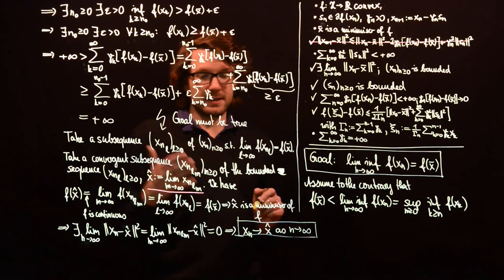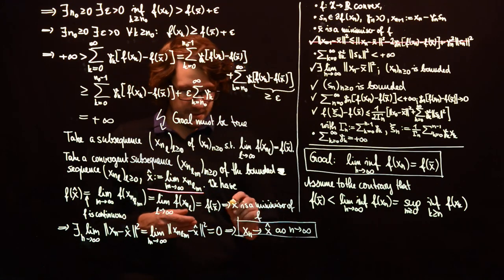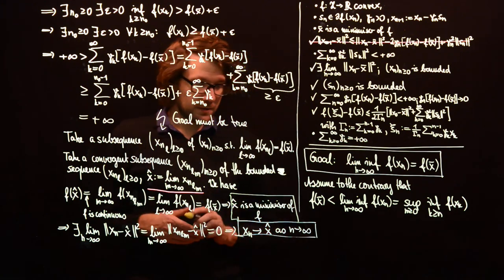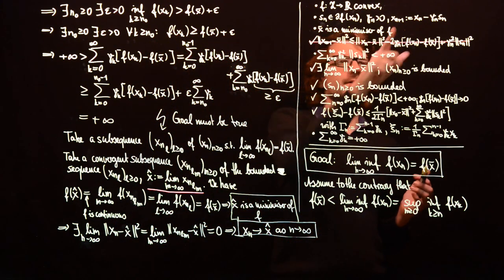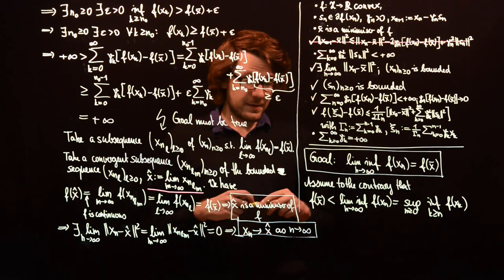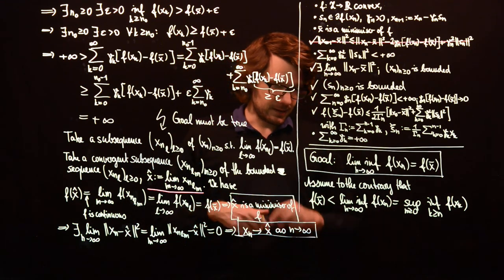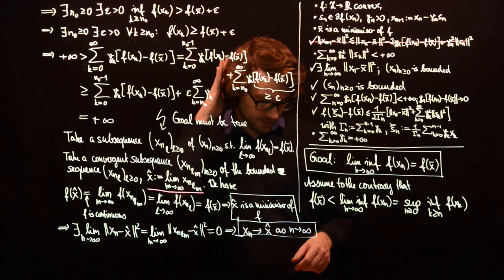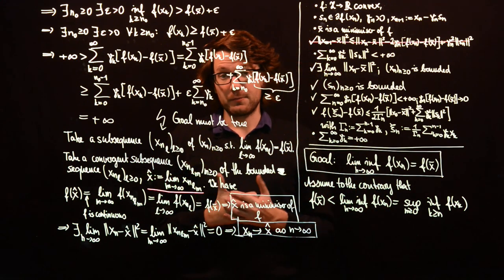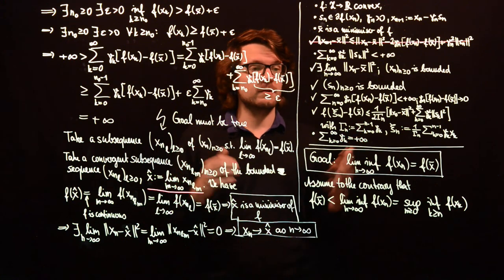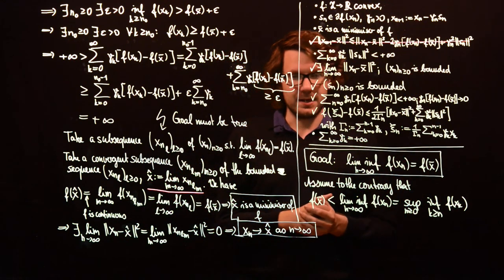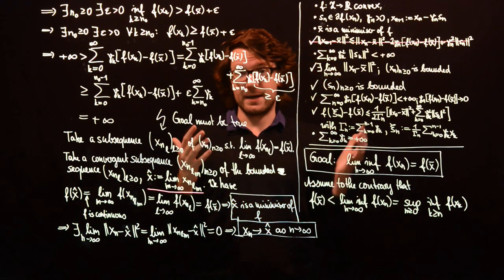We have shown that x̂ is a minimizer of f and that the sequence of iterates xn converges to x̂. The last video in this series on the subgradient method will be a conclusion where all these statements are formulated properly as a theorem.